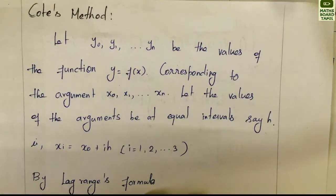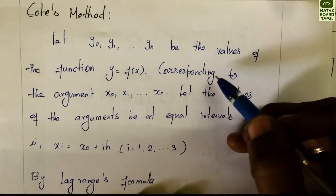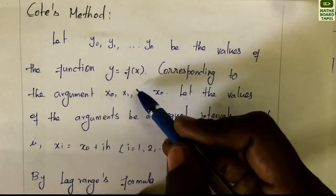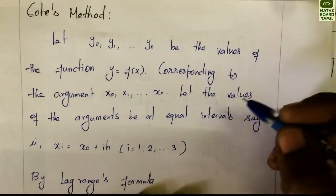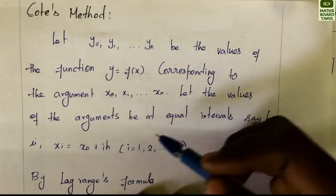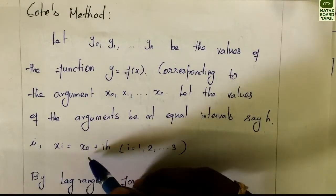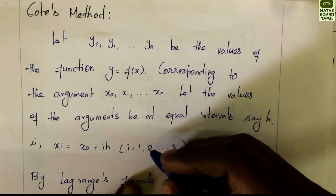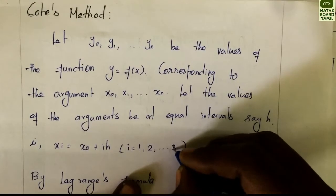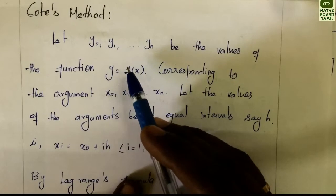Welcome to Max Board Tamil. In this video, we will study Boole's Cotes method. Let y0, y1, etc., yn be the values of the function y = f(x) corresponding to the arguments x0, x1, etc., xn. Let the values of the arguments be at equal intervals, say h, that is xi = x0 + ih, where i = 1, 2, 3, ..., n.